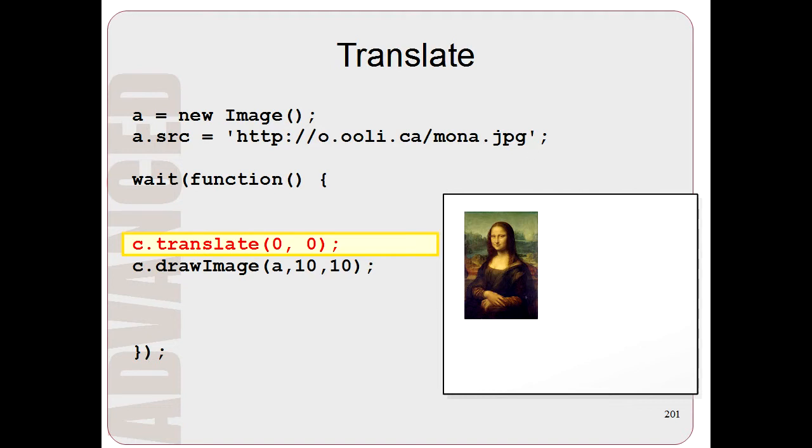So here's the second affine transformation, translation. So the translate command just moves the image. Now if you use 0,0, the image doesn't move at all.